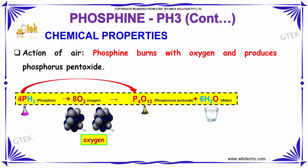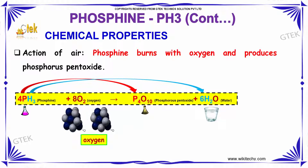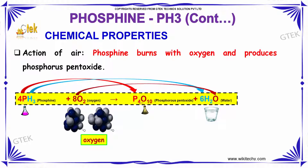Action of air: Phosphine burns with oxygen and produces phosphorus pentoxide.